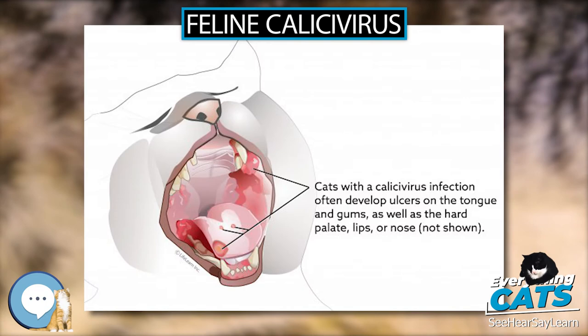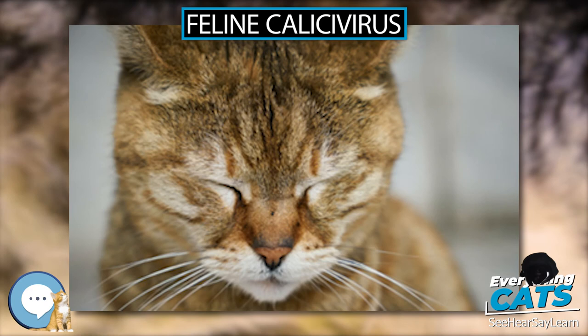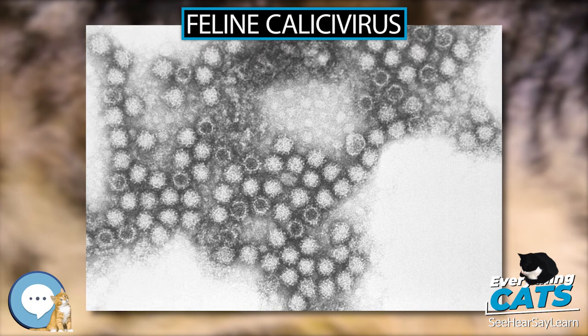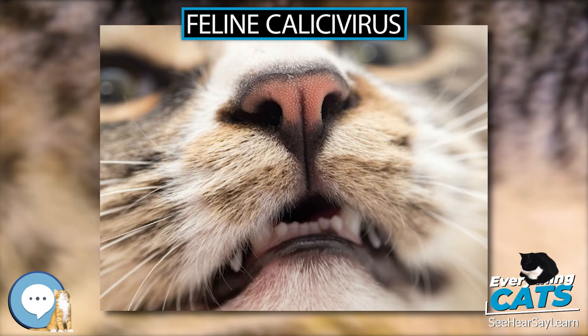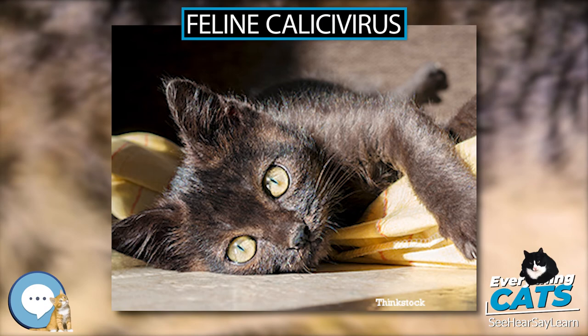There is no specific treatment for FCV. Antibiotics are used for secondary bacterial infections, and immune modulators such as lymphocyte T-cell immune modulator have been used for immune support. Supportive nursing care and rehydration are used for dehydrated and anorexic cats. Corticosteroids or azathioprine may be used for polyarthritis. Stomatitis is very difficult to treat; antibiotics, corticosteroids, and tooth extractions have all been used with varying success. Cats on corticosteroids must be monitored carefully for worsening of any upper respiratory infection.